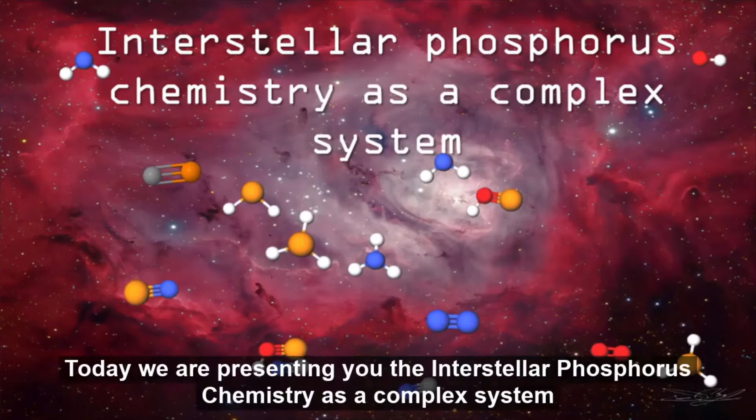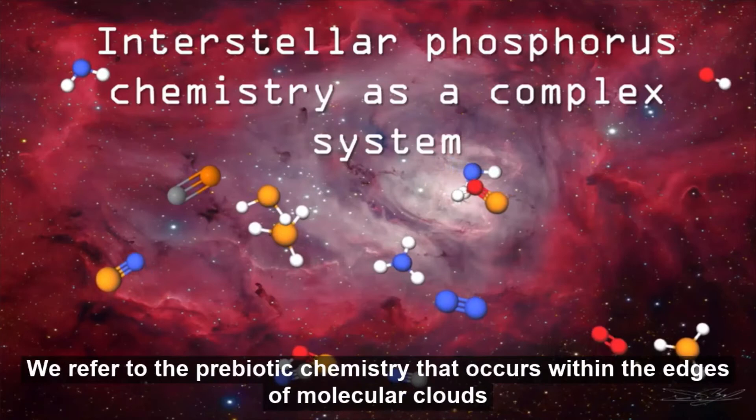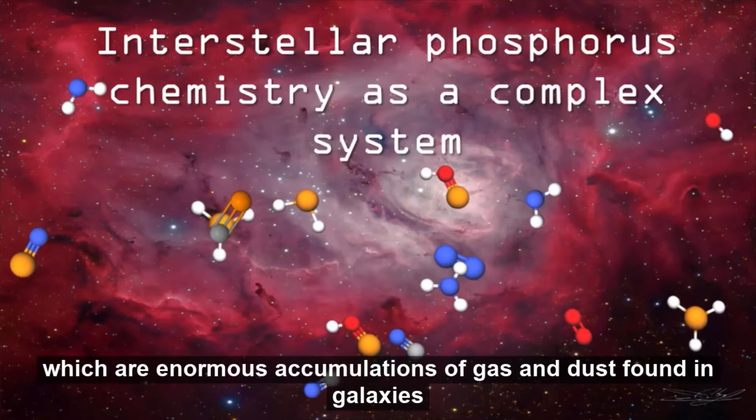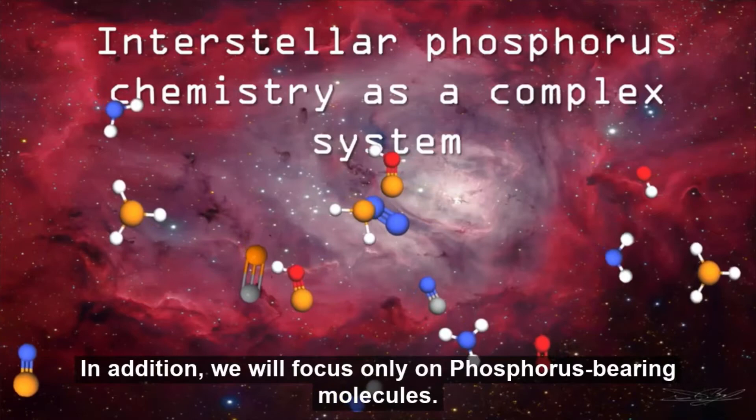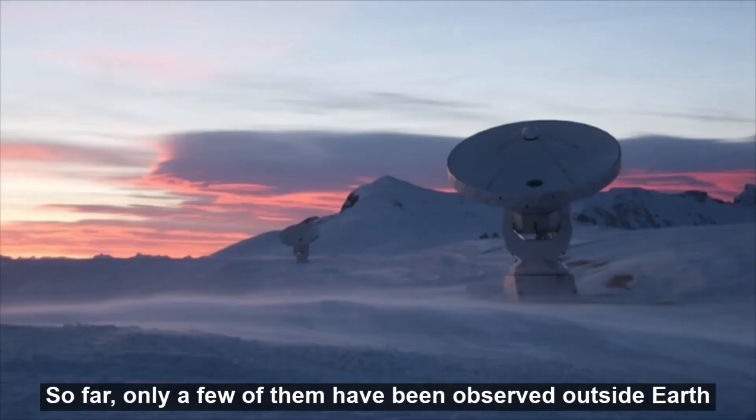So, today, we are presenting you the interstellar phosphorus chemistry as a complex system. We refer to the prebiotic chemistry that occurs within the edges of molecular clouds, which are enormous accumulations of gas and dust found in galaxies. In addition, we will focus only on phosphorus-bearing molecules. So far, only a few of them have been observed outside Earth, with the use of radio telescopes. But, why only phosphorus?